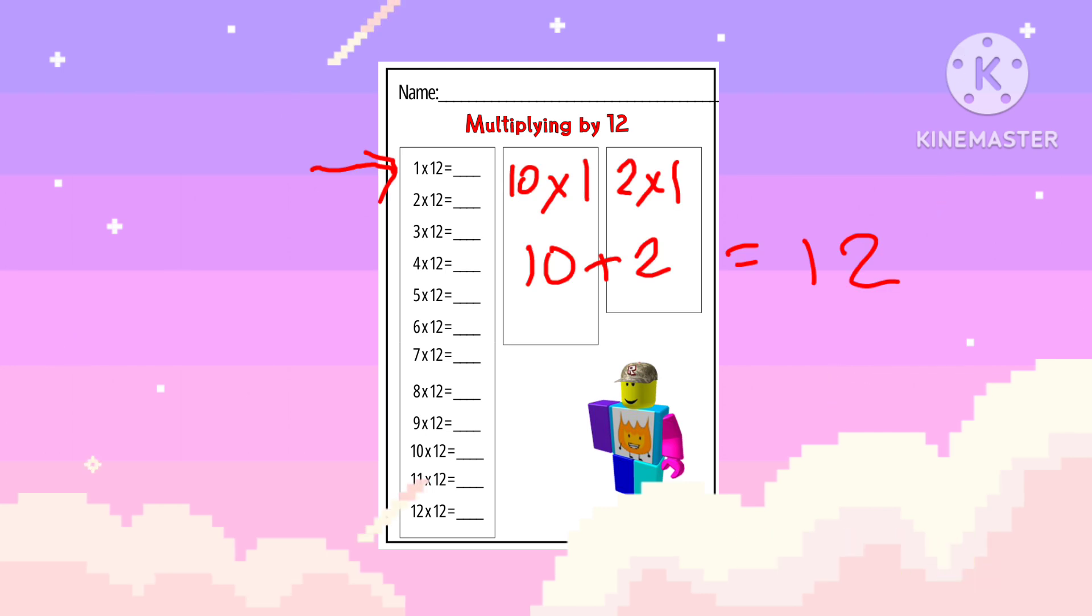Let's start with the first one. 1 times 12. That 12 is gonna be split up into a 10 and a 2. So I'll do 1 times 10 and I'll do 1 times 2. That gives me 10 plus 2 equals 12.